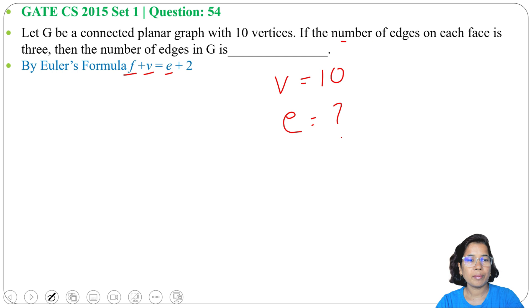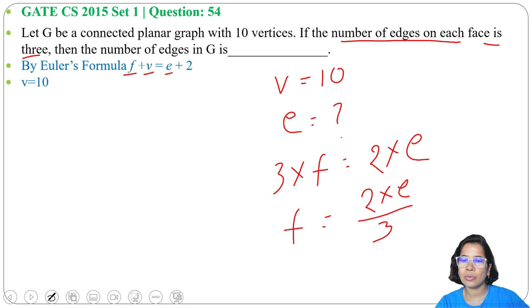But here it's written that the number of edges on each face is 3. So 3 into F equals 2 into number of edges. What will be F? F will be 2 into E divided by 3.